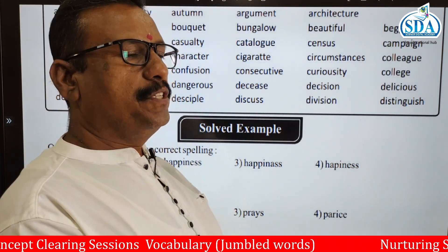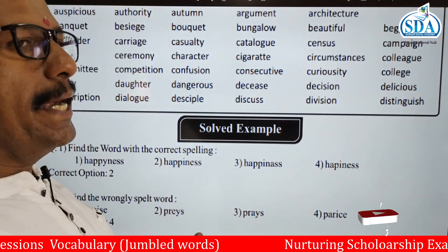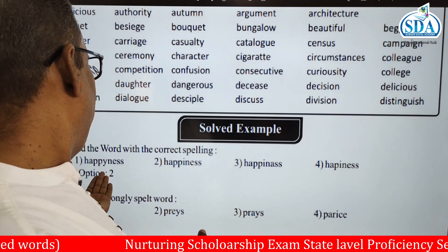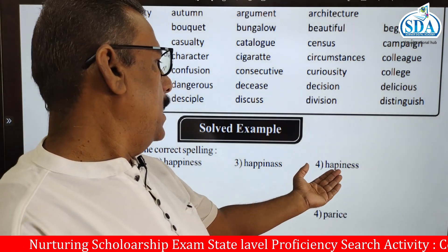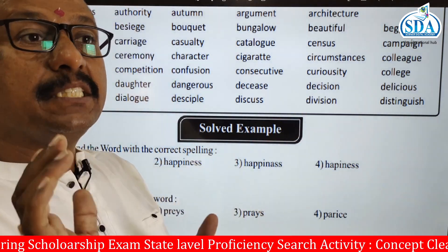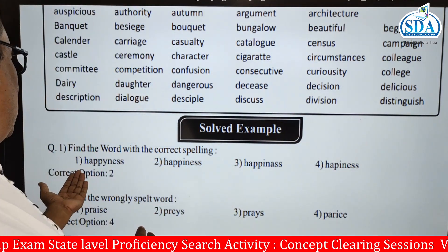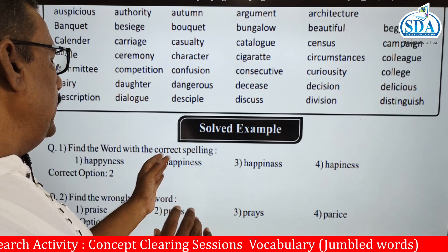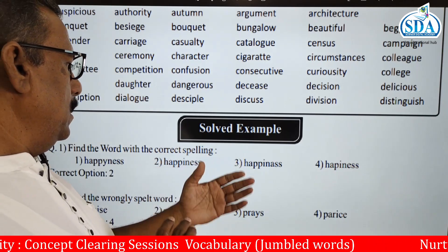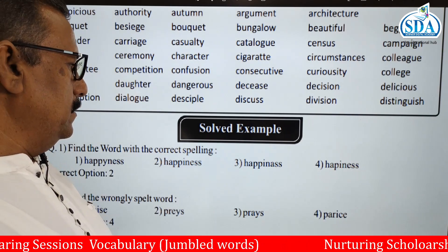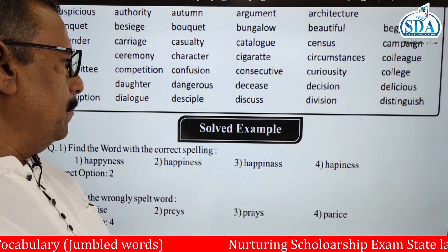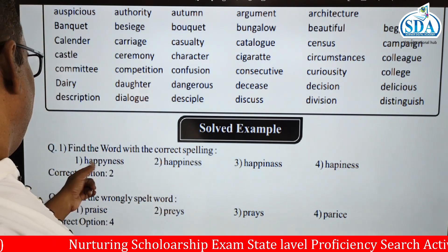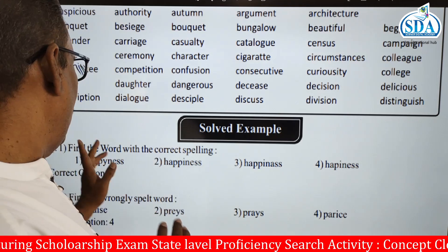Our first question is: find the word with the correct spelling. You have to find the correctly spelled word. Here happiness appears four times with different spellings. The first option is H-A-P-P-Y-N-E-S-S — this Y is wrong, it gets eliminated, so it is wrong. The third option is H-A-P-P-I-N-A-S — that A is a wrong spelling.